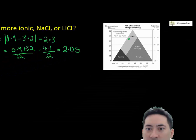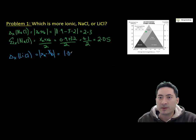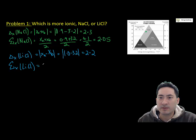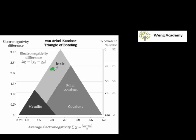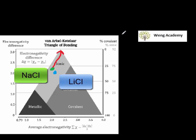We do the same for lithium chloride: what is the electronegativity difference and average electronegativity? That will allow us to have a close look at the diagram. And as you can see from the diagram, sodium chloride is in fact closer to the ionic point, so that would mean that it is more ionic.